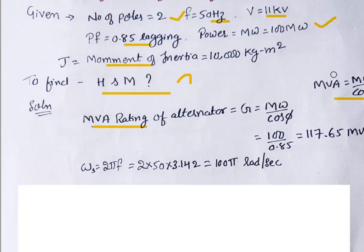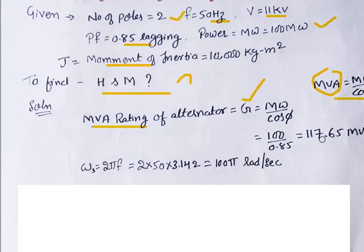So G = MW / cos φ = 100 / 0.85 = 117.65 MVA. Next, the synchronous mechanical speed ω_s: since the electrical frequency is given, ω_s = 2 × 50 × π = 100π radians per second.